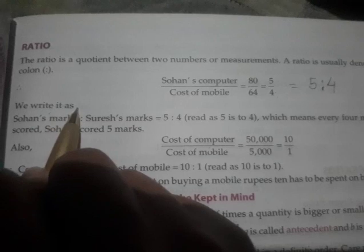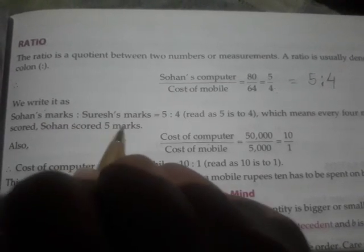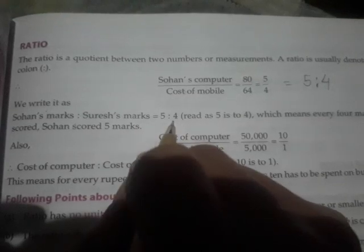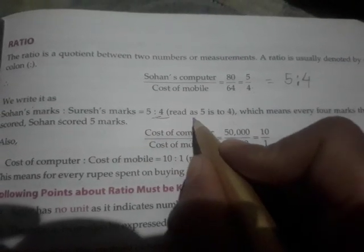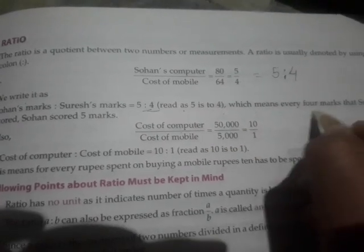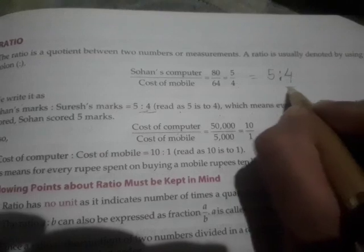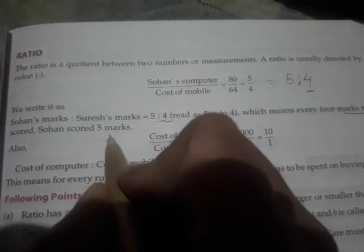We write it as Sohan's marks ratio Suresh's marks equals 5 ratio 4. This means for every 4 marks that Suresh scored, Sohan scored 5 marks.